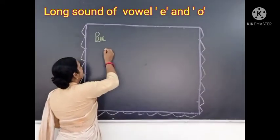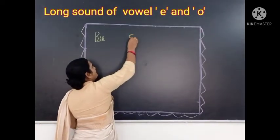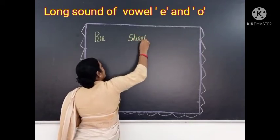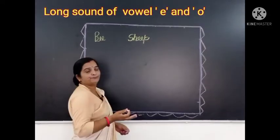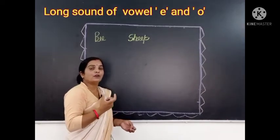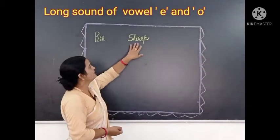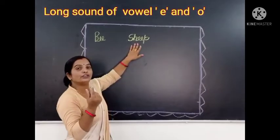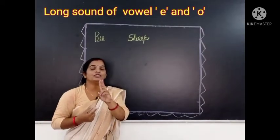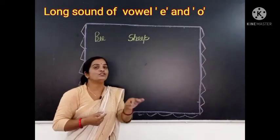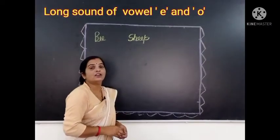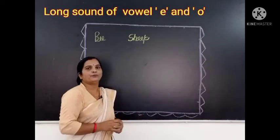In each word, we will write S-H double E-P. Sheep. S-H double E-P. Sheep. This is a long sound of vowel E word. Okay friends?